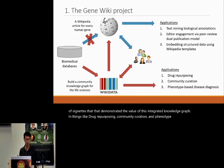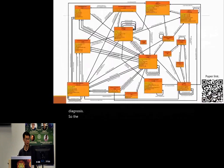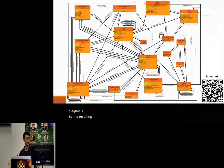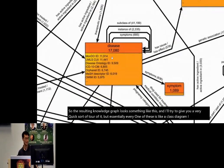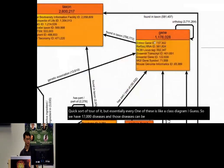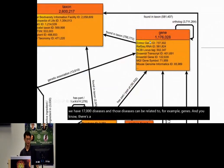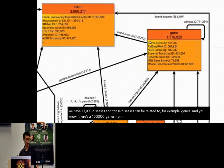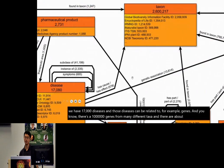The resulting knowledge graph looks something like this. Every one of these is like a class diagram. We have 17,000 diseases, and those diseases can be related to genes — there are about a million genes from many different taxa, and about 13,000 associations that join diseases to genes.